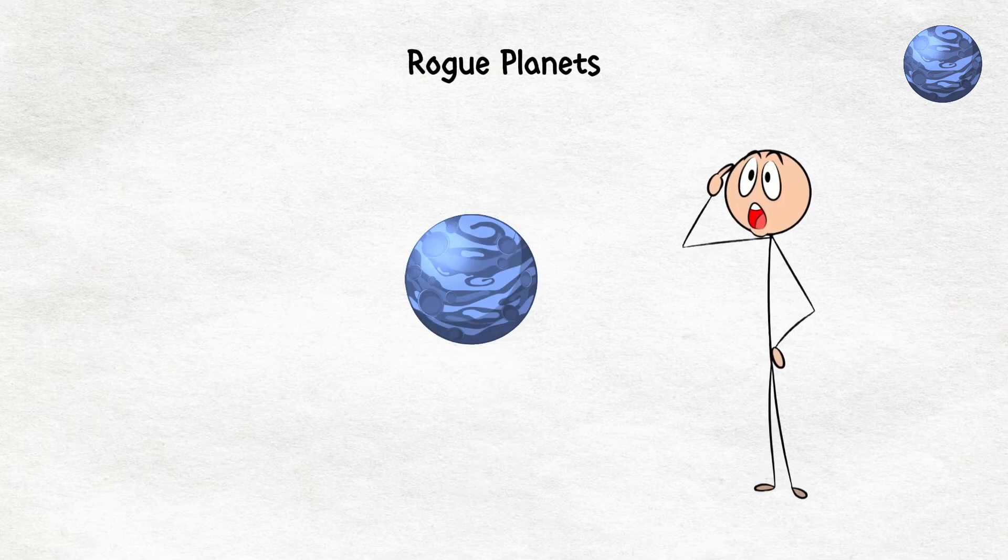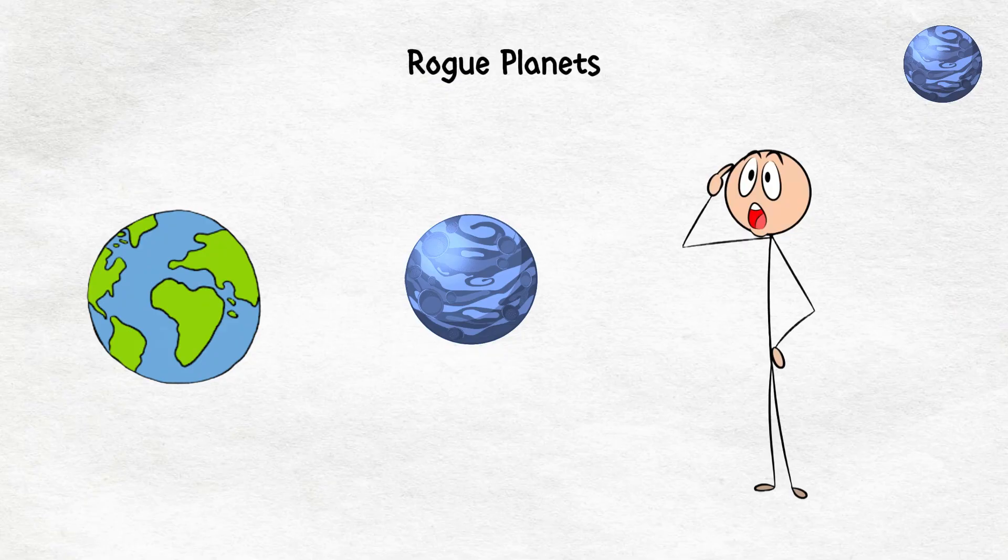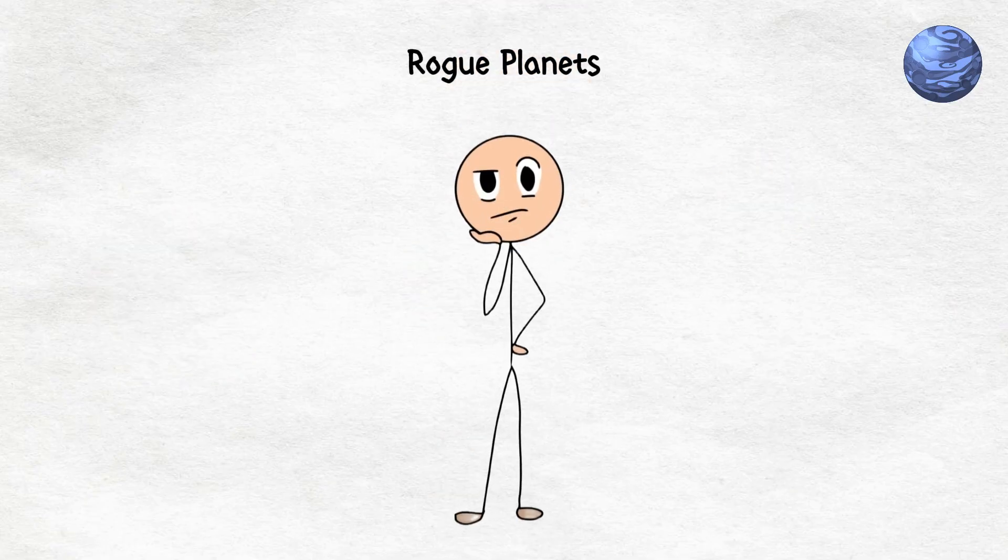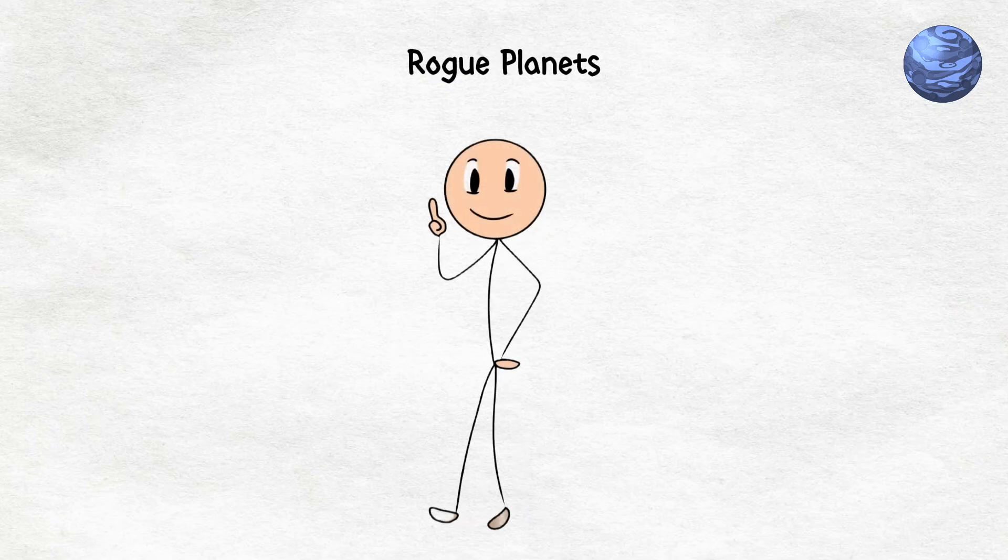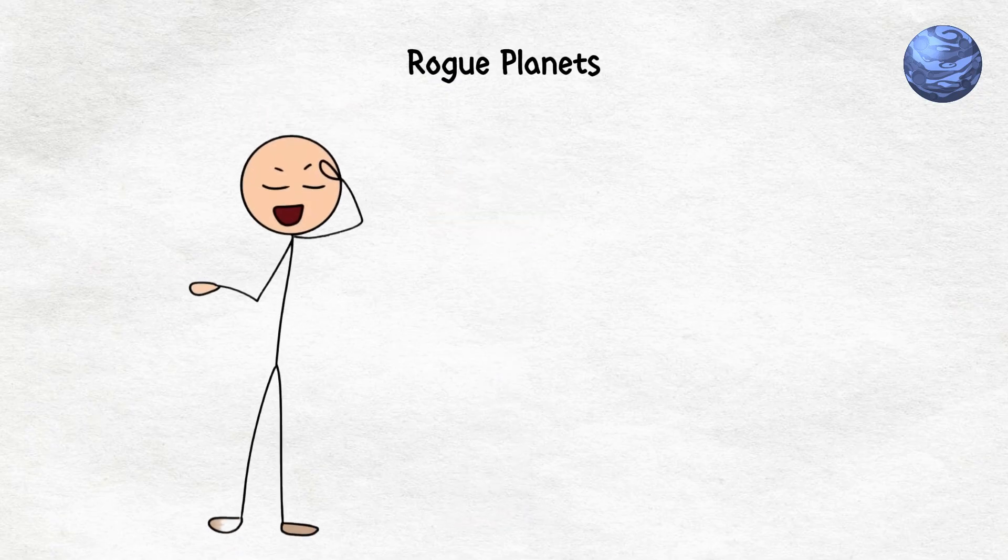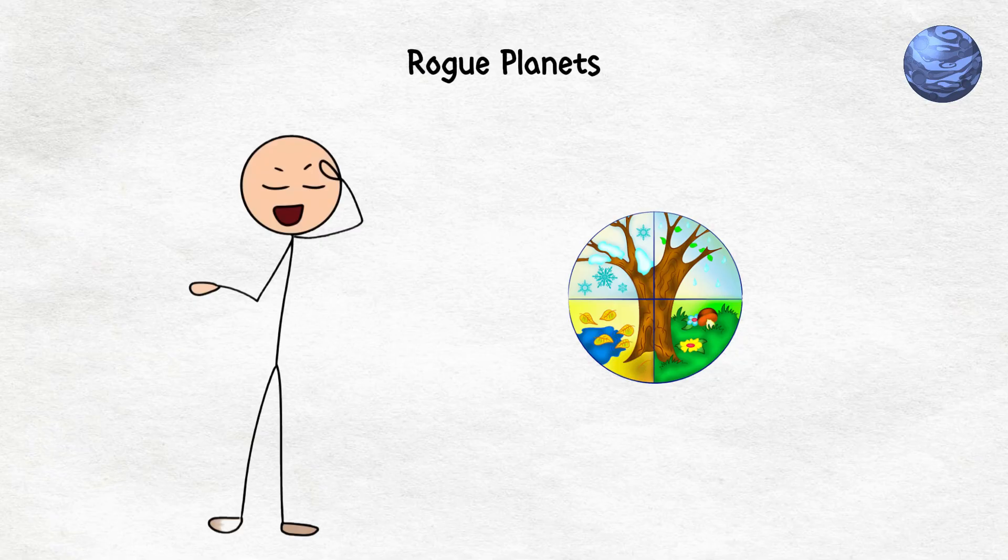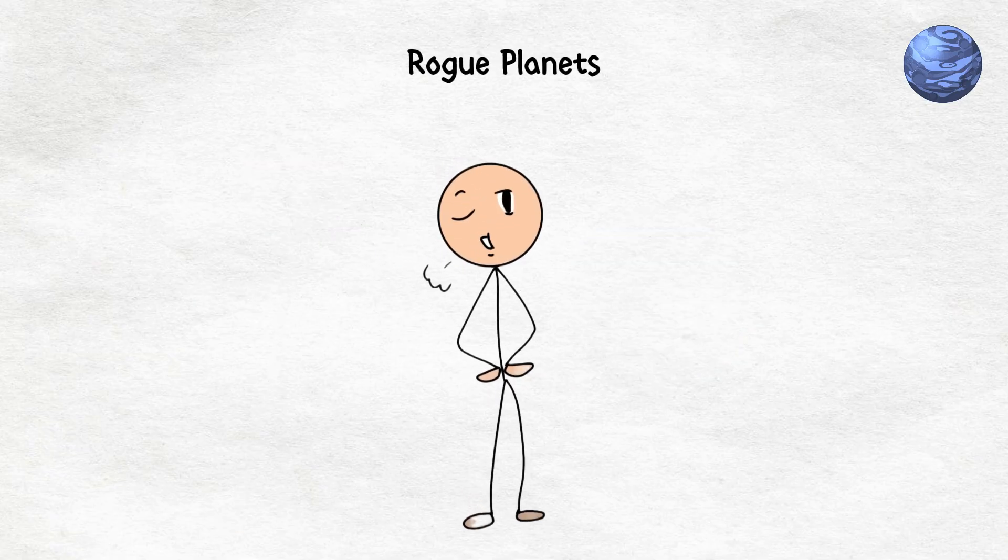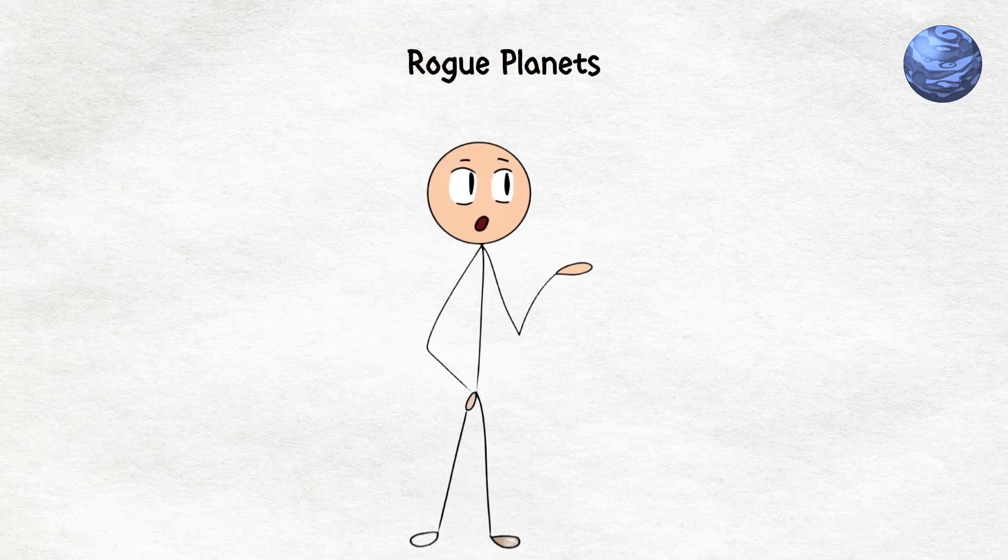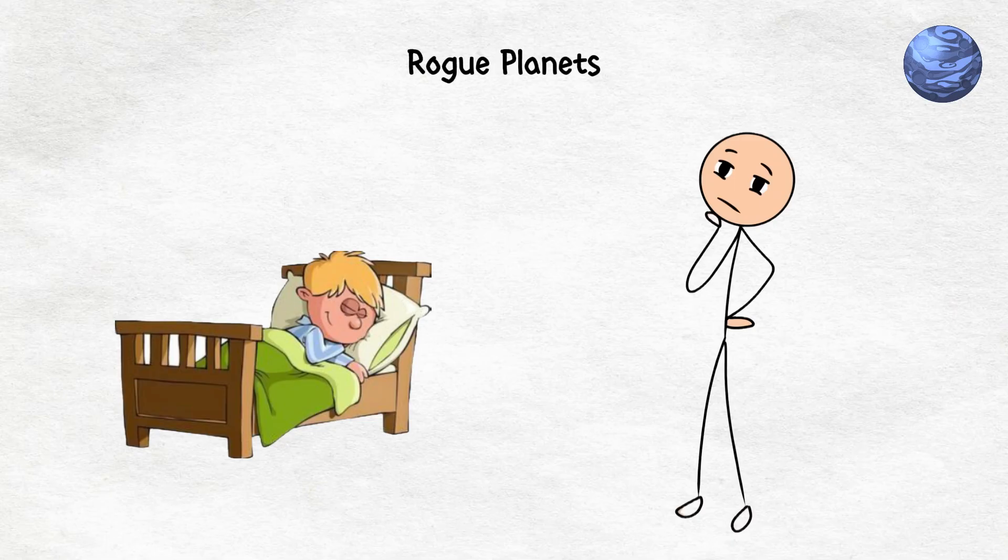Some of these rogue planets are massive. And if one were to wander too close to Earth, it could mess up our orbit, throw off our climate, and basically ruin our entire day. We would be dealing with unpredictable seasons, tidal chaos, and who knows what else. Thankfully, space is big, so the chances of this happening are slim. But hey, it is still something to think about when you are trying to fall asleep at night.